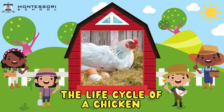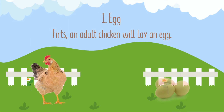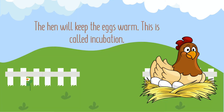Hi friends, now we are going to talk about the life cycle of a chicken. Let's go! Number one: egg. An adult chicken will lay an egg. The hen will keep the eggs warm — this is called incubation.